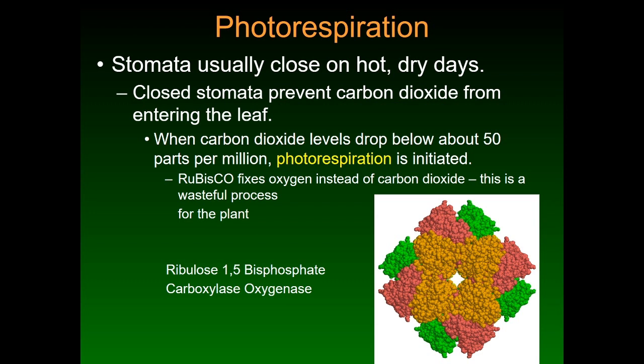Photorespiration happens because stomata — those are the pores on the underside of the leaf that allow gases to come in and out of the leaf — when it's hot and dry, the plant will basically close the stomata to keep from drying out and dying. And the problem is then it can't exchange gas with the air around it.